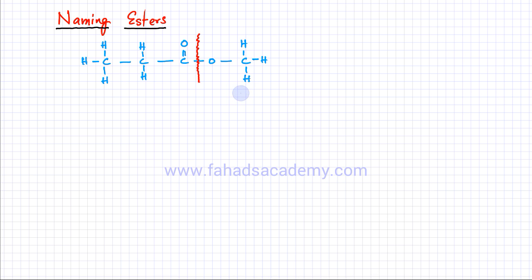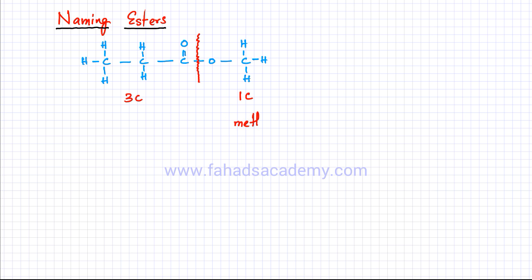This side has one carbon atom, and this side has a total of three carbon atoms. So one side has one carbon atom and the other side has three carbon atoms. We know that an organic compound with one carbon atom starts with 'meth,' so I'll start the name with 'meth.' On the other hand, a compound with three carbon atoms starts with 'prop.'